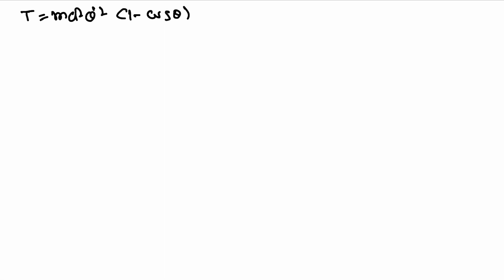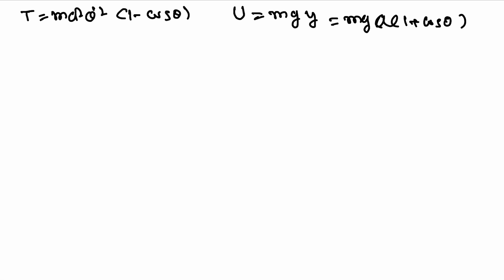The potential energy U = mgh, where h is the y-coordinate, so U = mg · a(1 + cosθ), giving U = mga(1 + cosθ).